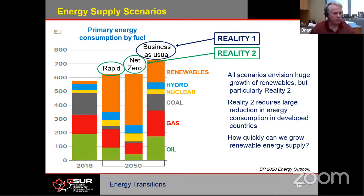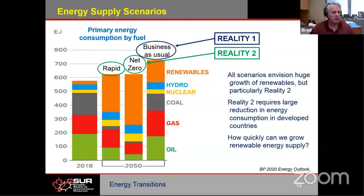Now let's look at the actual energy supply scenarios into the future. This is from BP's 2020 energy outlook. There are many different scenarios and projections showing how much of the different energy types we'll be using 20, 30, or 40 years from now. BP put out three different scenarios: business as usual, rapid energy transition, and net zero emissions transition. All of the scenarios envision a huge growth of renewables — the orange bar that in 2018 is very small becomes very large in all cases by 2050.